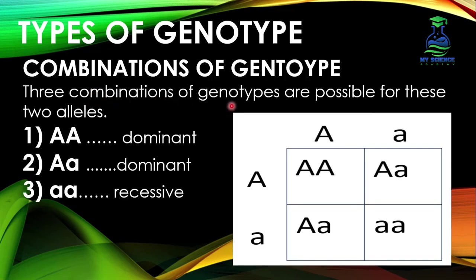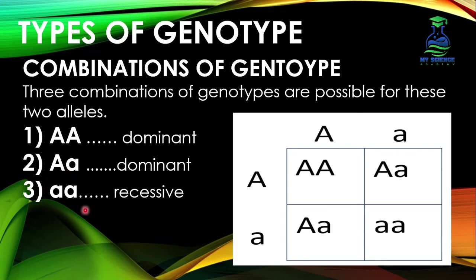Since genes are present in the form of pairs, three possible combinations are possible from these two alleles: capital A capital A, capital A small a, and small a small a. Capital A is the dominant allele while small a is the recessive allele. When both capital A alleles are present, they are dominant. In the heterozygous condition, capital A and small a, allele A is again dominant. But when both recessive alleles are present, the person will be albino — because of the absence of dominant allele A, there will be no production of body pigments.